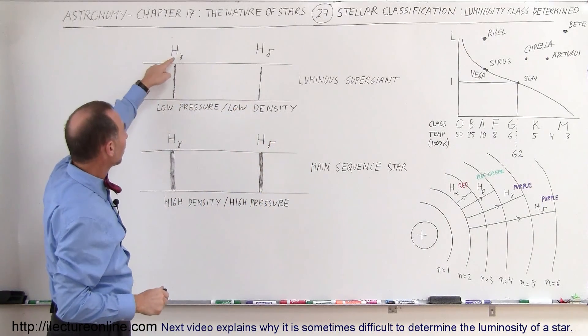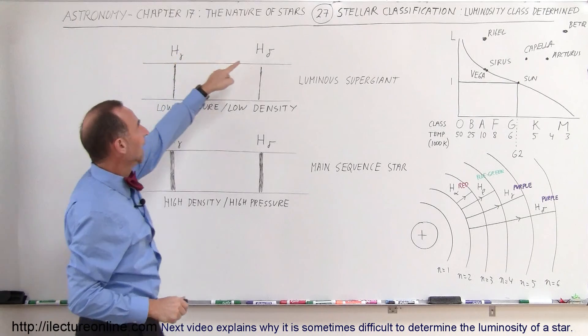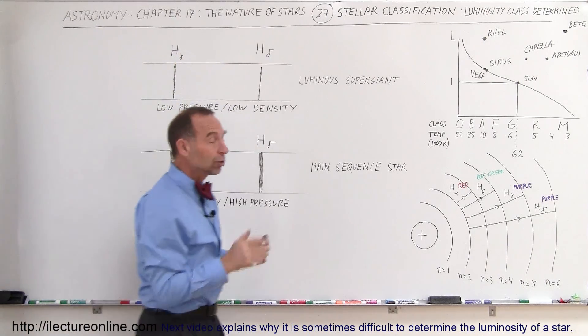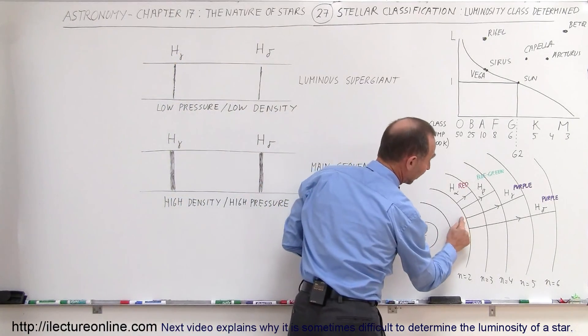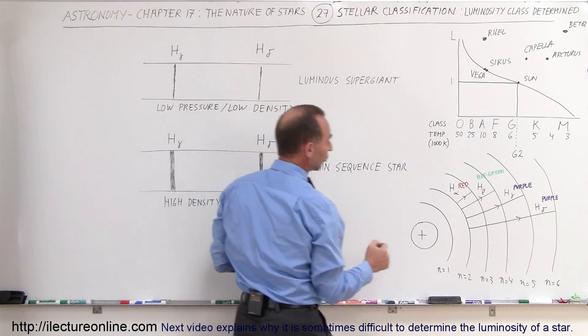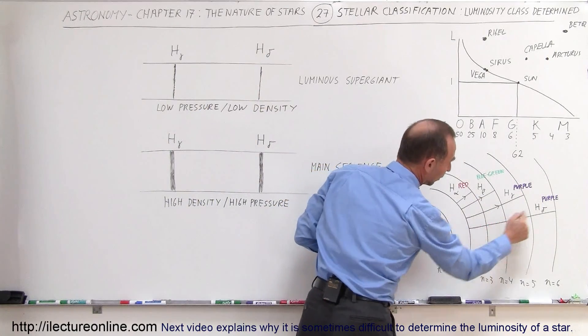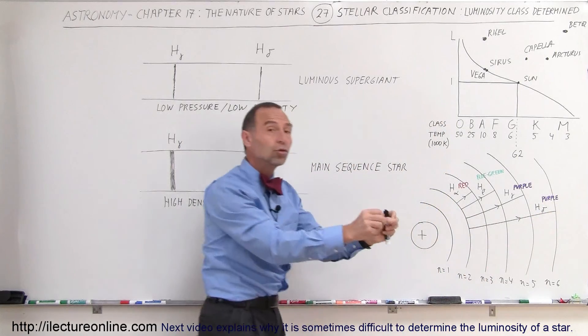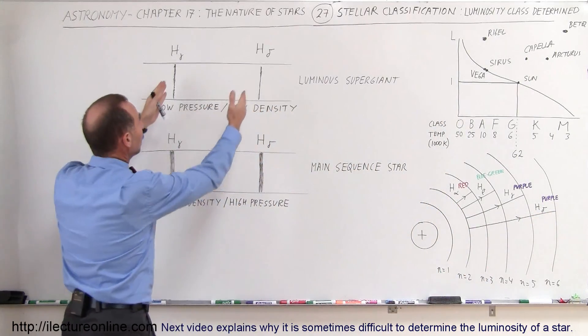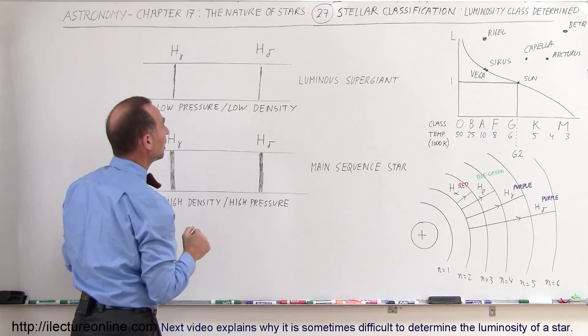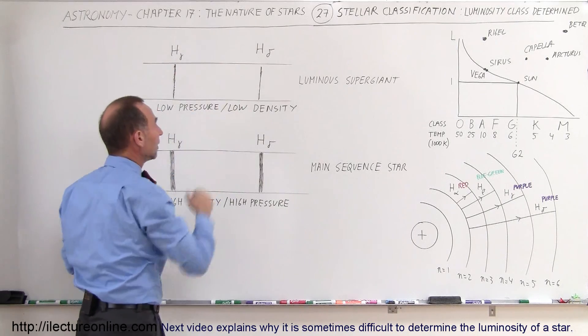Now here we have what we call the H-gamma line and the H-delta line. The H-gamma line corresponds to an electron jump from the second level to the fifth level, and the H-delta line corresponds to an electron jump from the second level to the sixth level. So those two lines simply would be gone, those would be purple colors, they would be gone, and you see a black line.